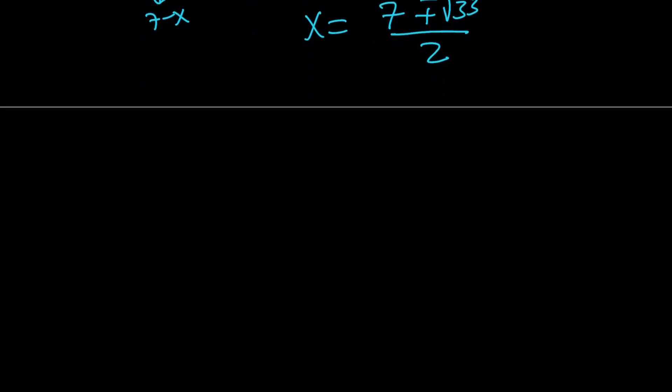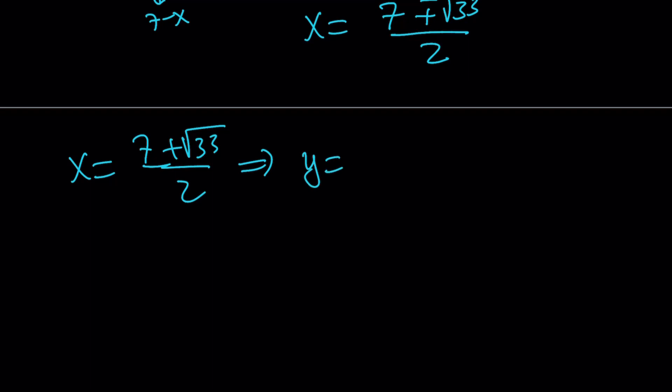Now here's what this means. If x = (7+√33)/2, then y is just going to be its conjugate because their sum and product need to be integers. So we do need that relationship. And they're just going to switch around. And we're going to get all the solutions from here.